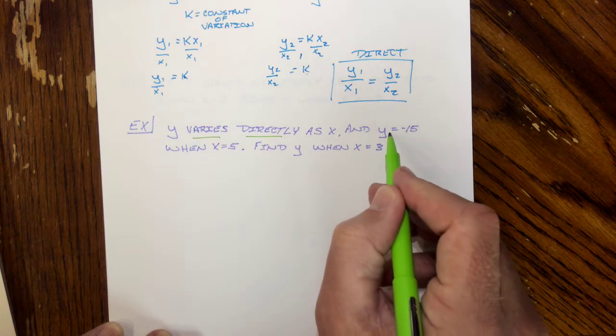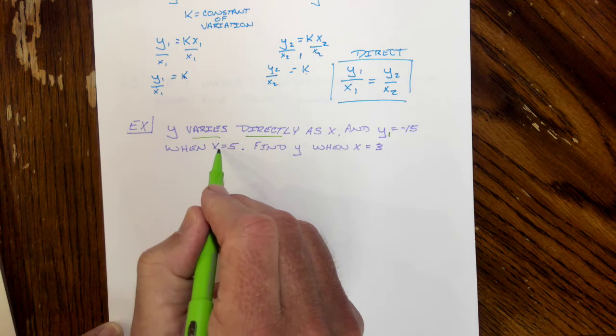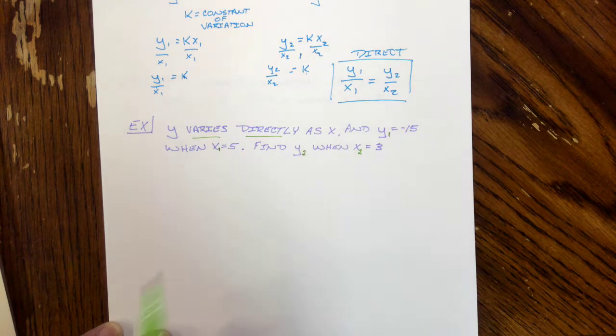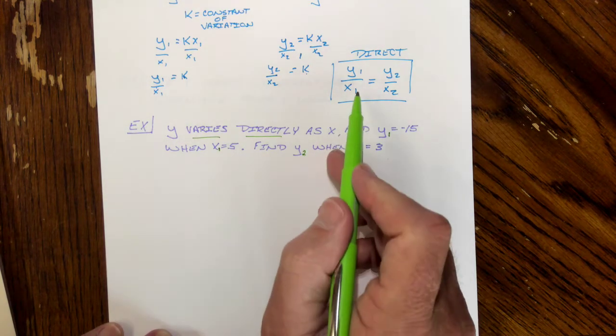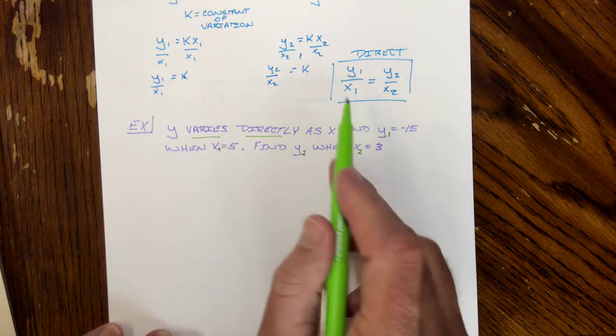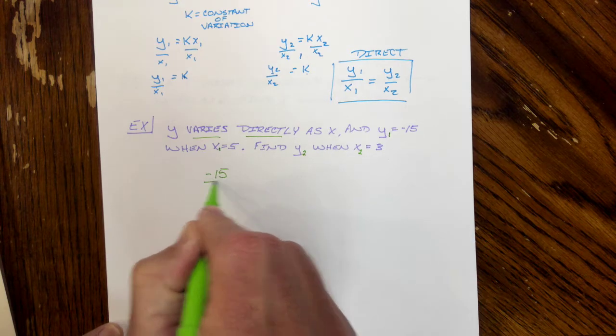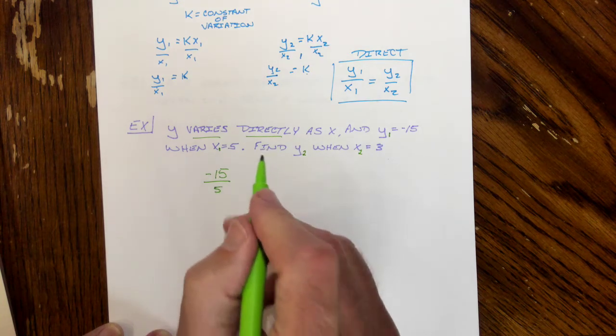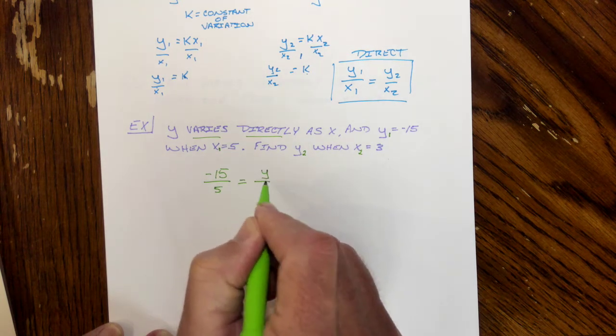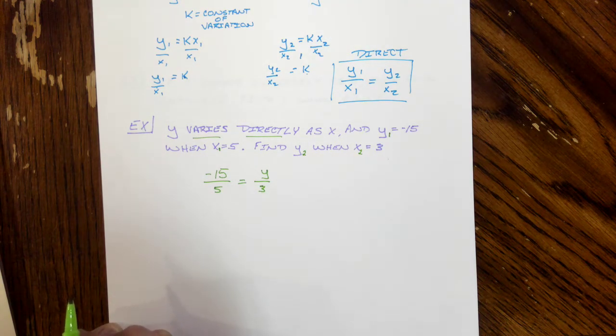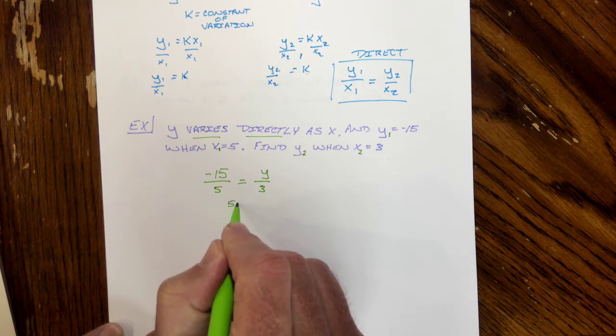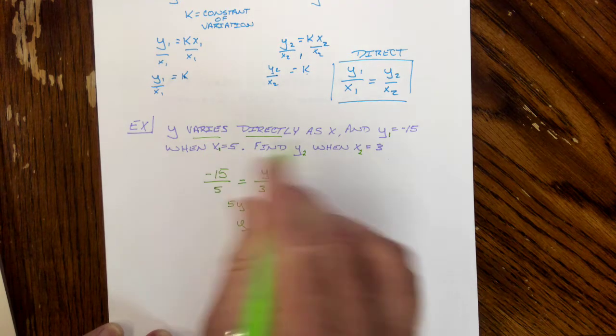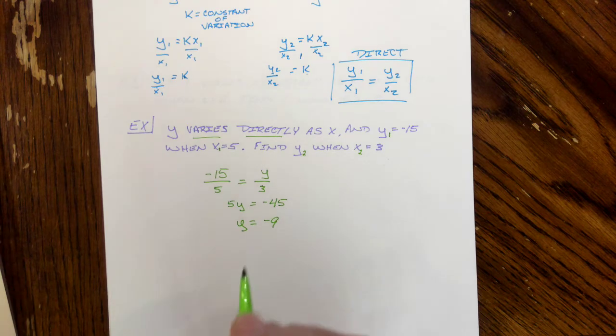Here's the key phrase, so tell me what type of problem I'm in. Here, then, is my first piece of information. So I'm going to call this Y sub 1. My first piece of information with X, I'm going to call it X sub 1. And then I'll call this Y sub 2 and X sub 2. So if I remember this, I get these things labeled. There's my setup. I'm going to put a negative 15 over 5. Yeah, you can reduce if you'd like. And I'm going to put a Y over 3. And then I'm going to solve. 5Y equals negative 45.